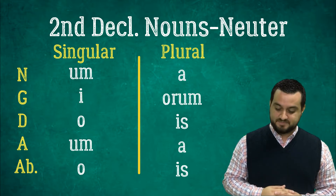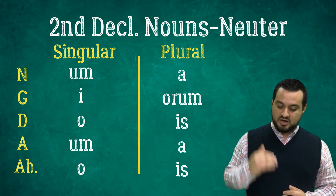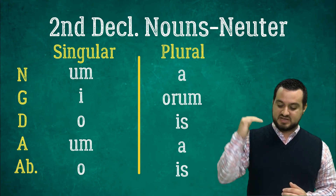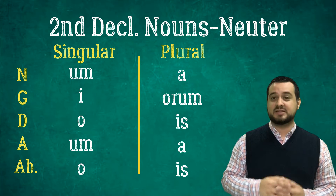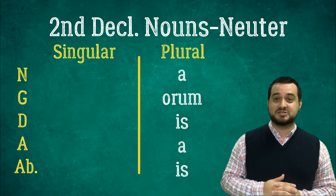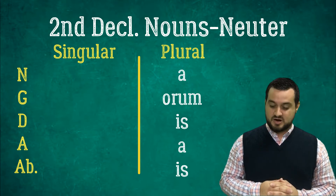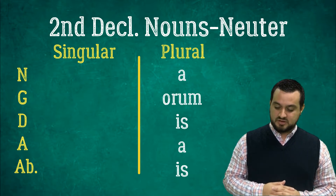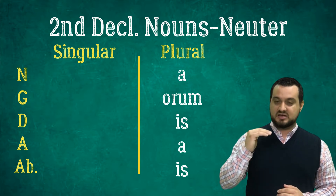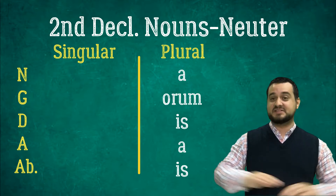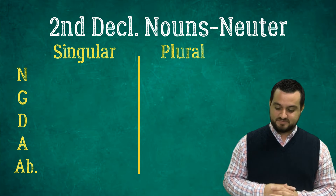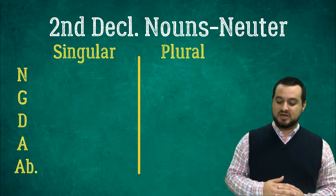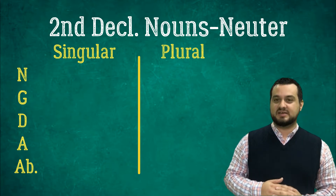Let's say it one more time: Um, I, O, Um, O. Now let's try the disappearing line game. Um, I, O, Um, O. Oram, Is, Is. Now let's take them all away: Um, I, O, Um, O. Oram, Is, Is.